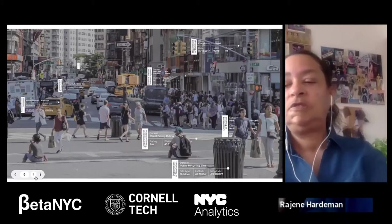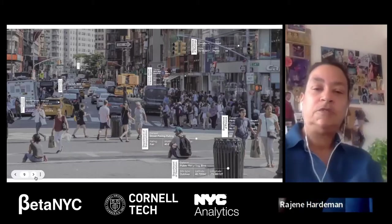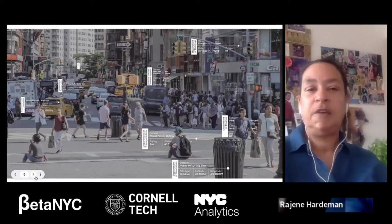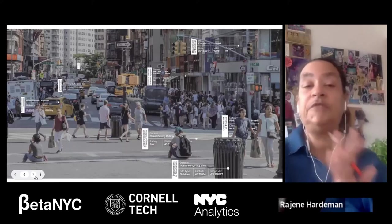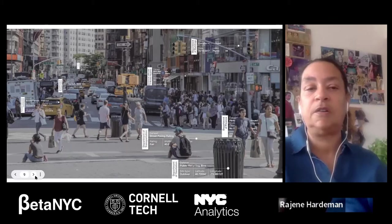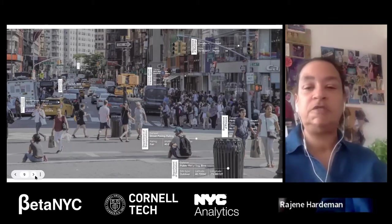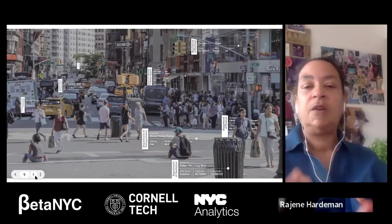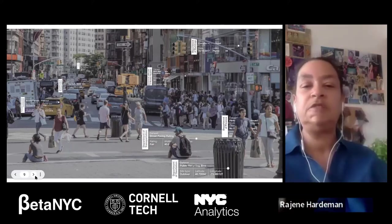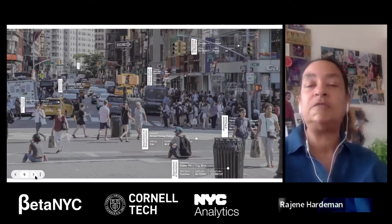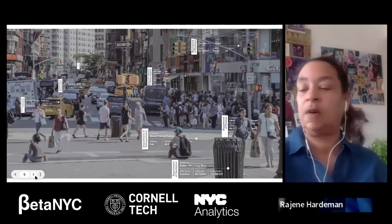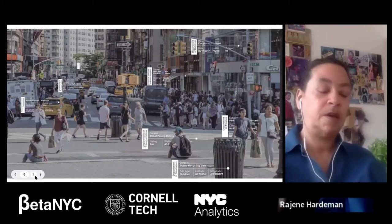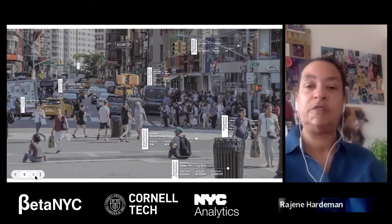This is a street scene of Union Square, 14th Street and Broadway, and it gives an example of different types of data points collected: paved streets, recycling bins, parking tickets, traffic lights, restaurant inspections — all these data points across the city are access points of data being collected, collated, and structured within New York City Open Data.